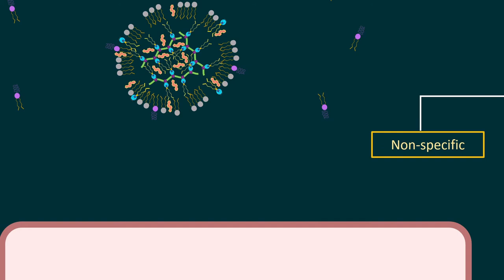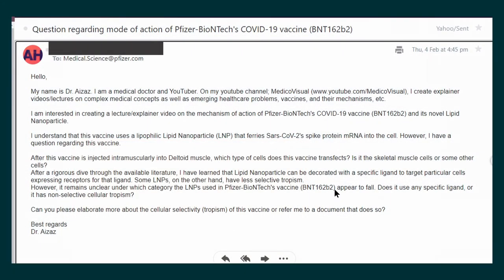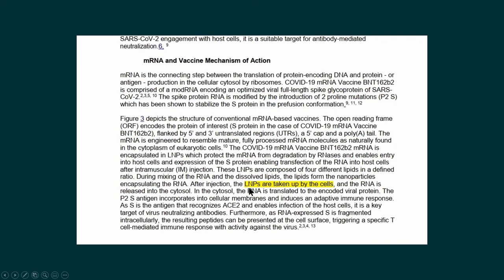It is not immediately clear what type of lipid nanoparticles are used in the Moderna and Pfizer vaccines. I emailed this query to Moderna, Pfizer, and BioNTech. I haven't received a reply from Moderna or BioNTech, but Pfizer replied — although their reply was not very useful. They didn't really answer which cells the LNPs are taken up by; they just said LNPs are taken up by cells. Since there is no mention of decorating the lipid nanoparticles with ligands in Moderna's or Pfizer's literature, I assume they are using non-specific lipid nanoparticles.